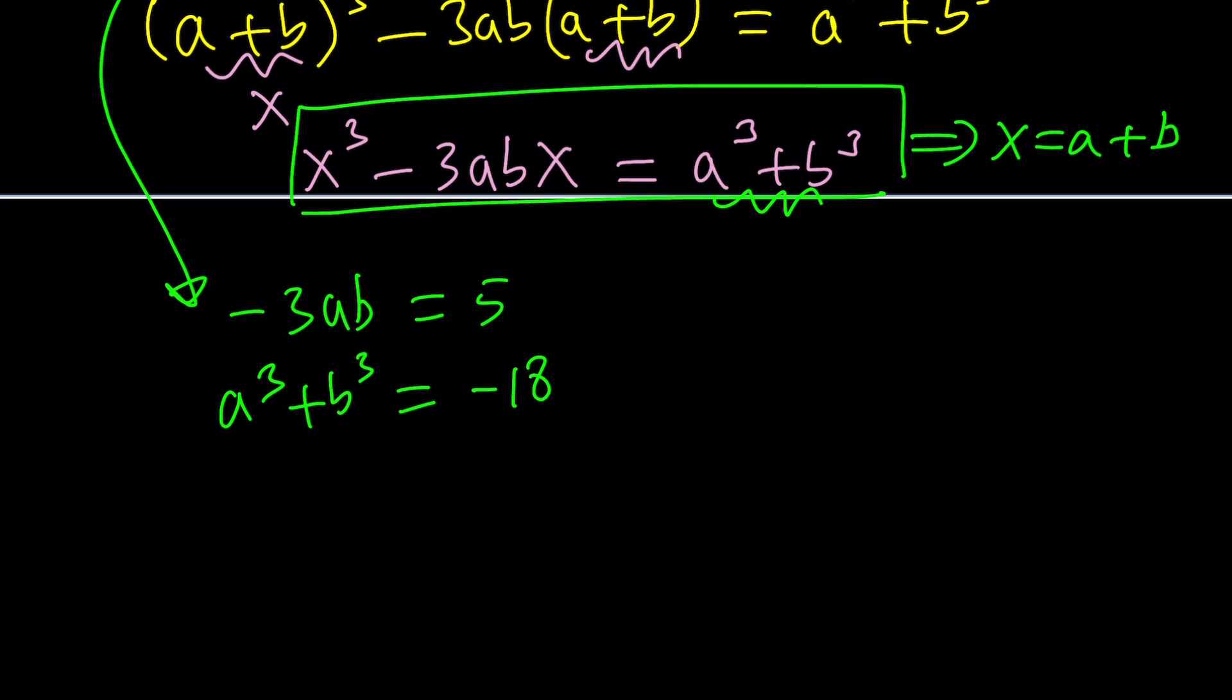At this point you're more than welcome to guess and check your solution if you can find what a and b are but I don't think it's going to be that straightforward. You are looking at two numbers whose product is -5/3 and the sum of their cubes is -18. So how do you solve this as a system?